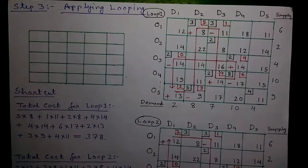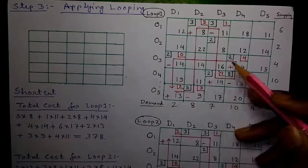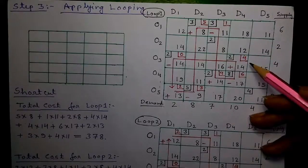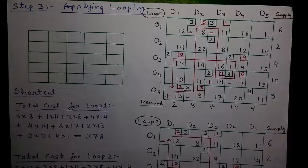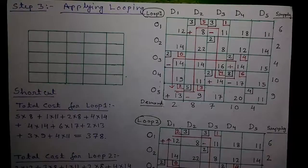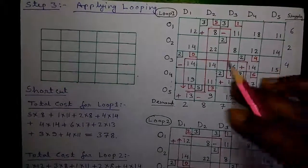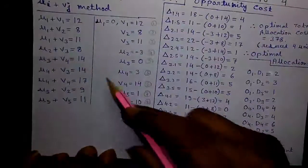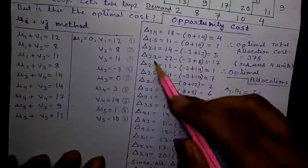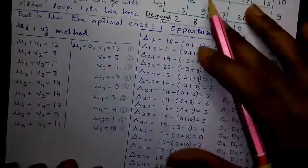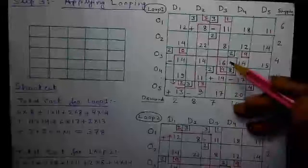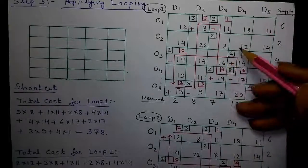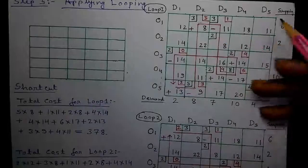Today in the 4th video I am telling you how to judge whether your present loop is optimal or not and how to proceed easily towards the optimal solution by doing less calculation. This is my shortcut. If you follow the rules, after each looping you have to calculate all the UI plus VJ values and all the del IJ values and check whether you get any negative del IJ value. If there is a negative del IJ value, you have to redraw the loops and again check for optimality. But now I am telling you a shortcut trick.